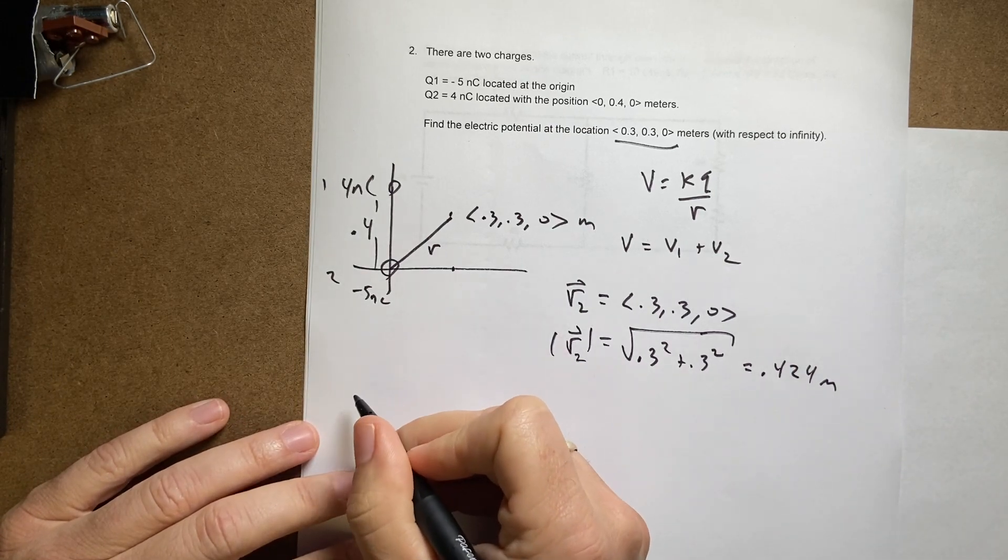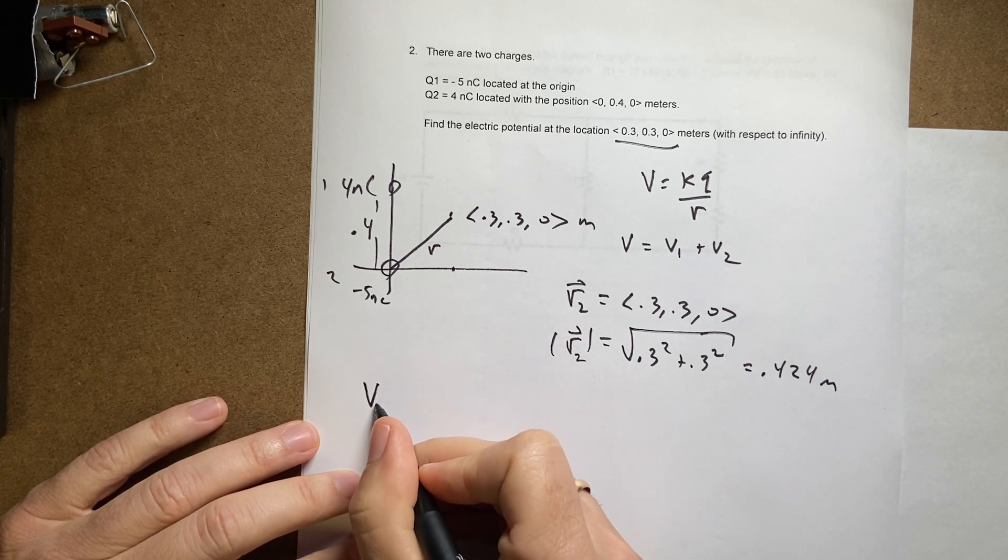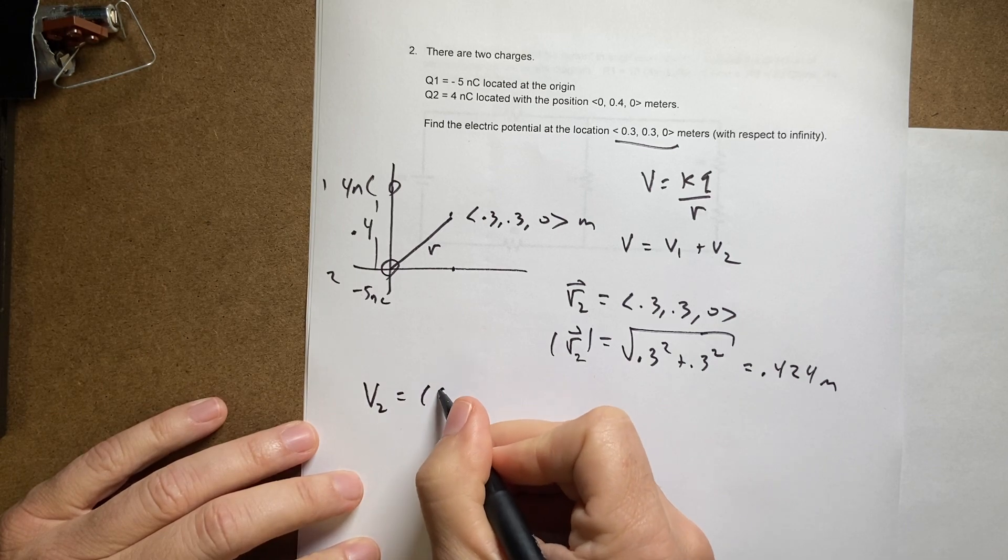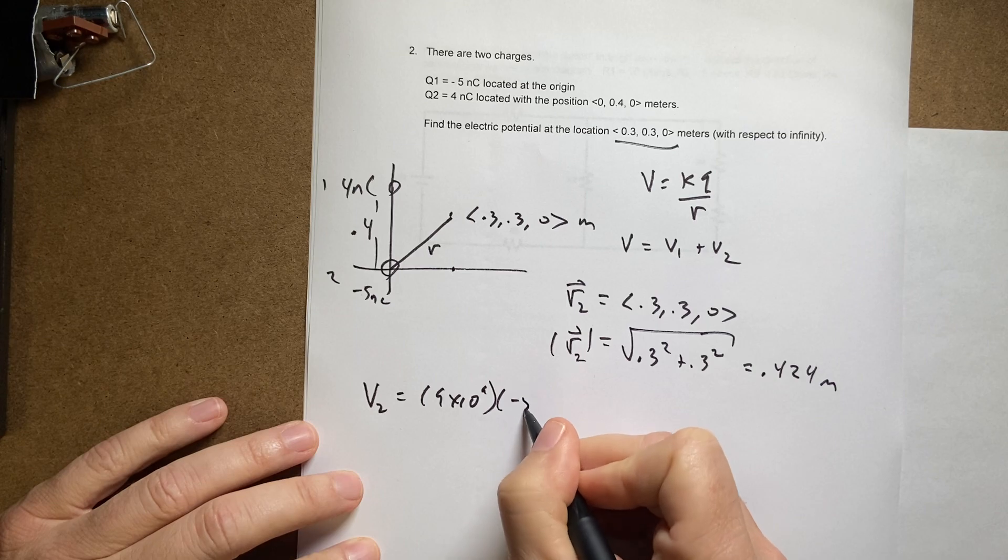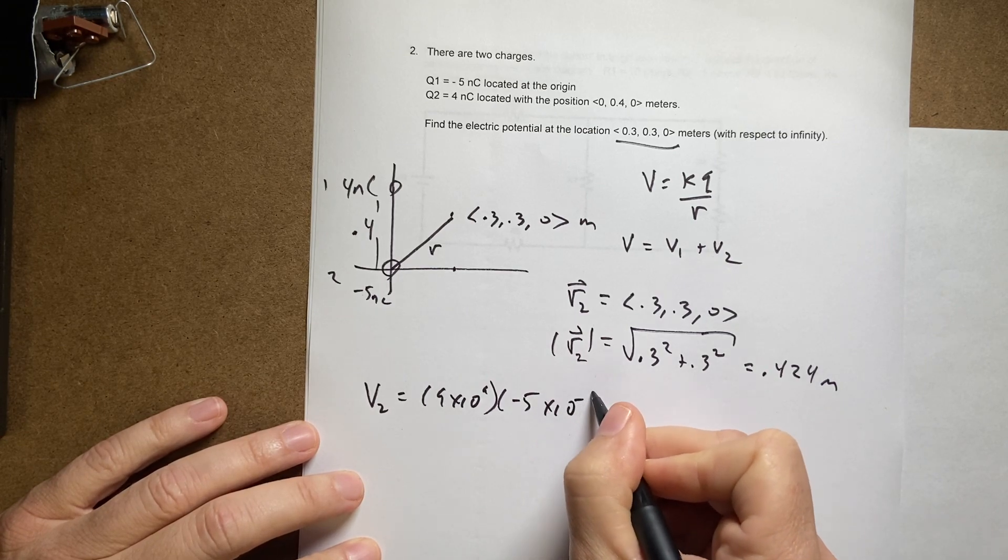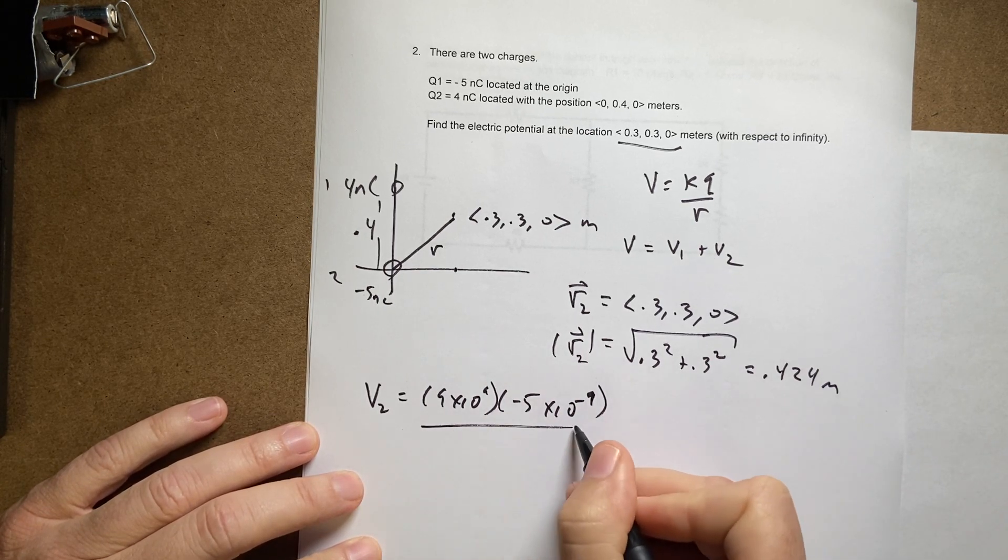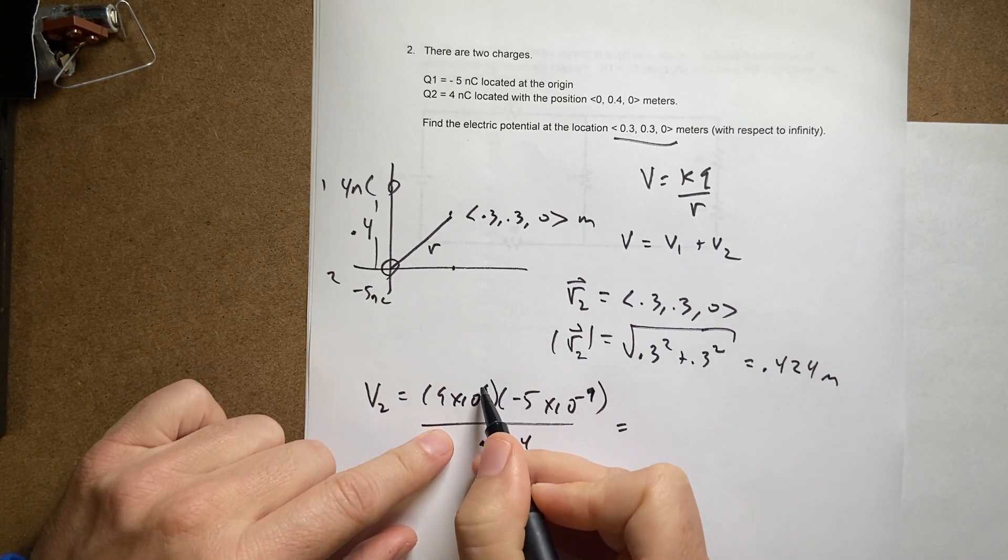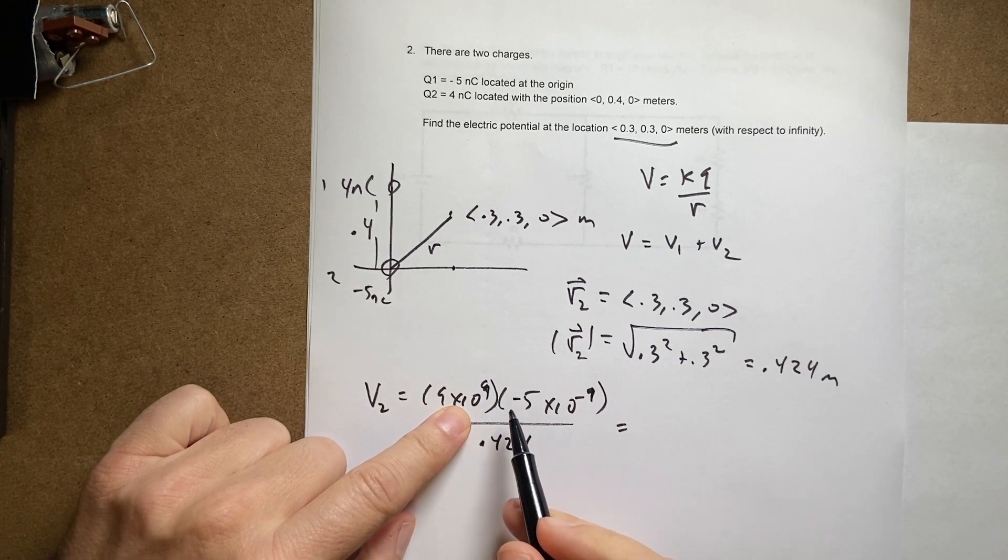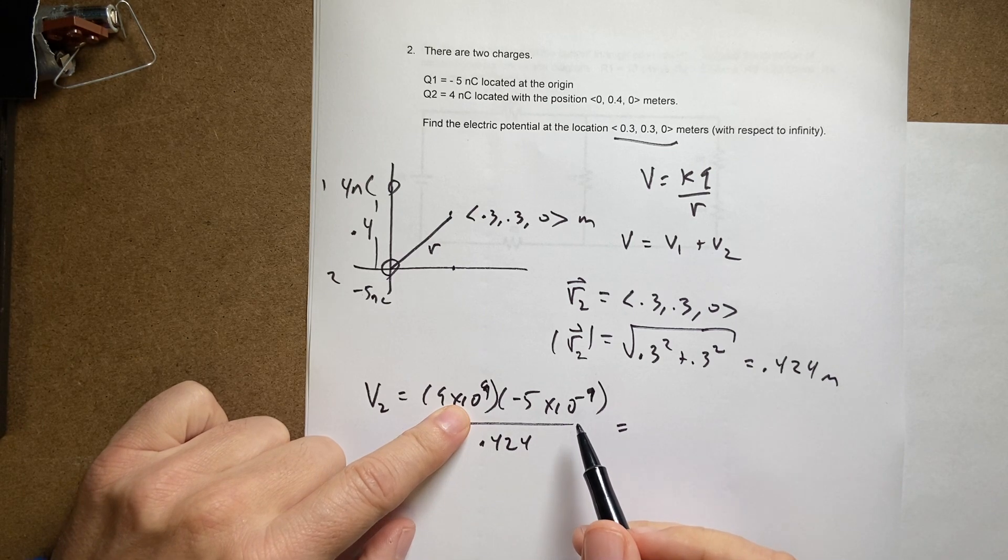So now I can go ahead and calculate V2. V2 is going to be k which is 9 times 10 to the 9th times Q which is negative 5 times 10 to the negative 9th divided by 0.424. Now I'm going to do a trick here. If I have 10 to the 9th times 10 to the negative 9th, that's just one.